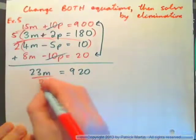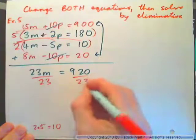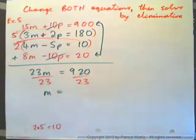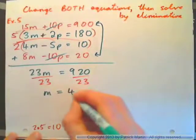Divide both sides by 23, and you'll find the value of m. So go ahead and do that, and then find the value of p. So we should have m is 40.